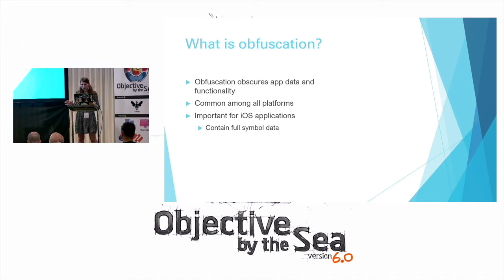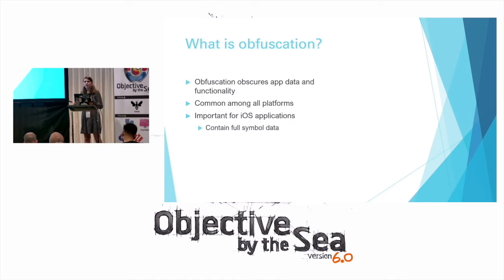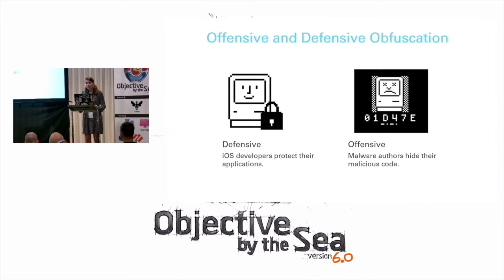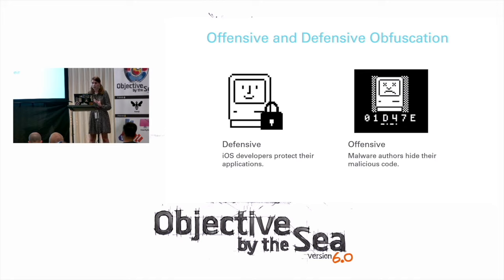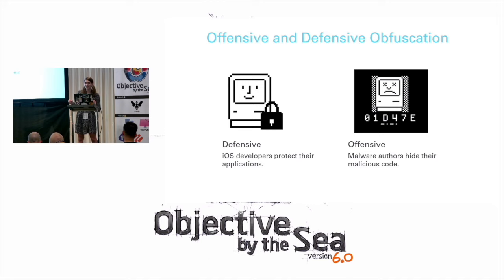What is obfuscation? It's anything used to try and obscure the underlying functionality of an application. This is common among many different platforms, but it's particularly important in iOS applications because they include a lot of additional symbol and resource data compiled inside of the iOS application bundle. There are offensive and defensive reasons for obfuscation — defensive being legitimate iOS developers protecting their apps, and offensive being malware authors trying to prevent reverse engineers from realizing their application is malicious.